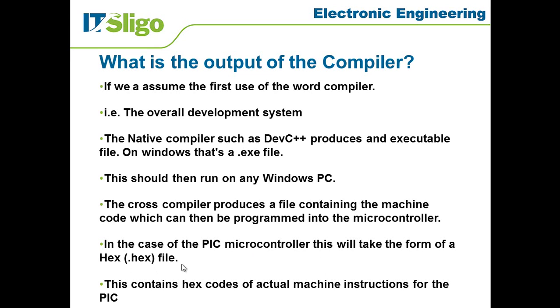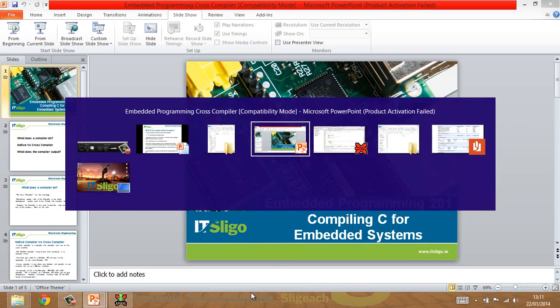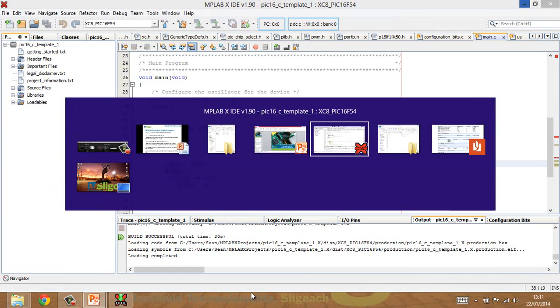The compilers all produce lots of other different files as well. They're capable of producing them and in many cases they will produce them, and we may not use them or they might be used internally in some process. But the important one for us in this particular case is the .hex file, because that's the file that we're going to use or that we could use to transfer onto the piece of hardware to actually get it to work. This contains the actual hex codes or machine instructions for the PIC.